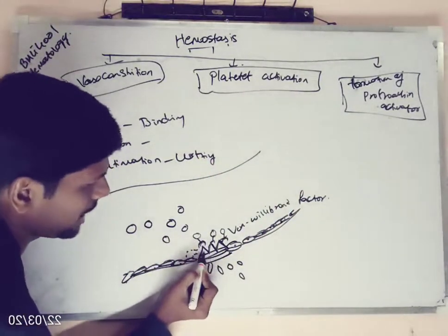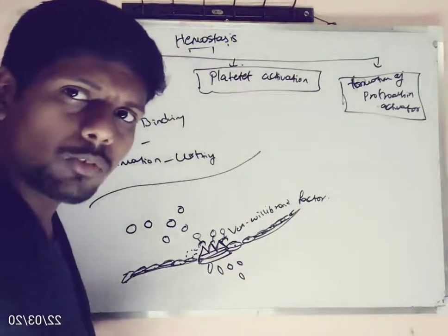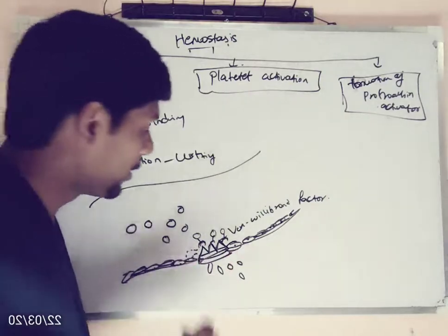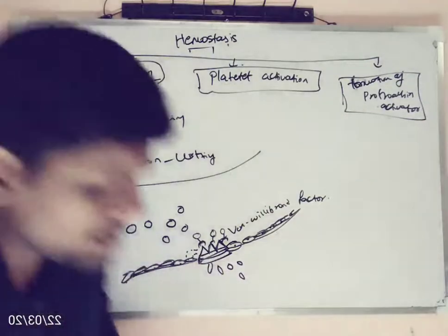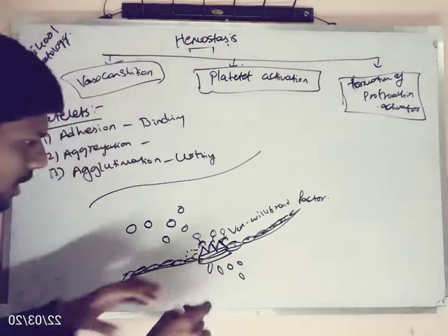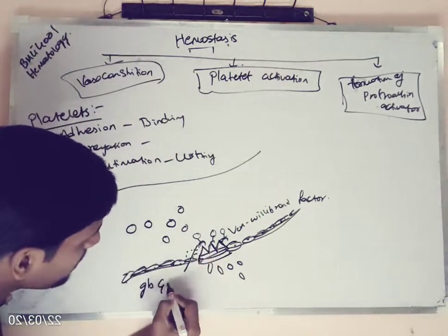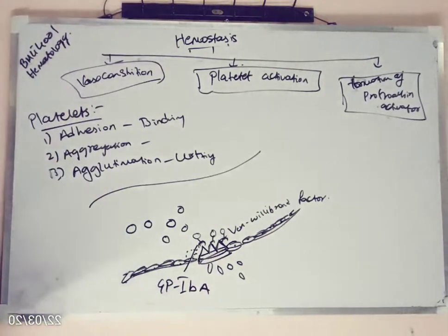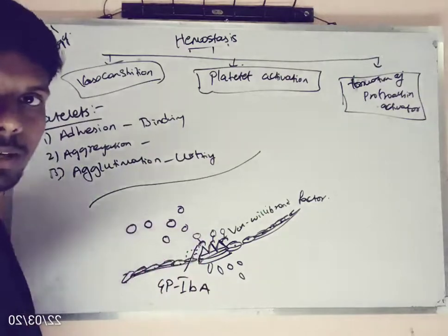Platelets came and they will start binding onto the von Willebrand factor. Platelets will bind to the von Willebrand factor by a glycoprotein. Imagine platelets having hands — with the help of this hand, they will bind to the von Willebrand factor. This hand-like structure of the platelet is called glycoprotein GP1BA. With the help of glycoprotein 1BA, platelets will adhere to the von Willebrand factor.